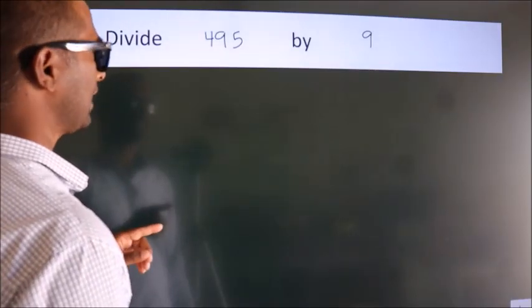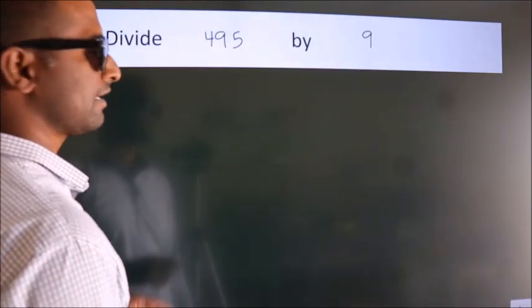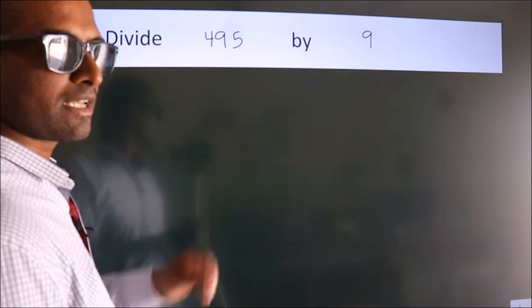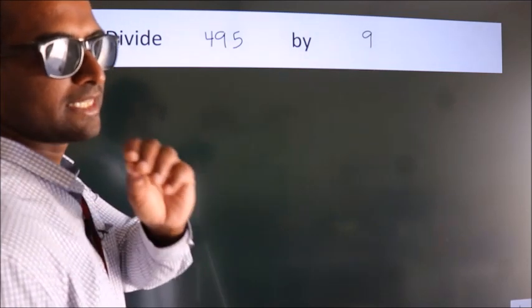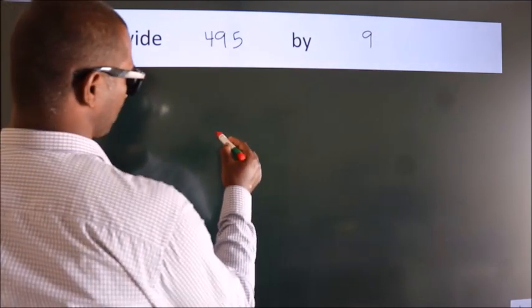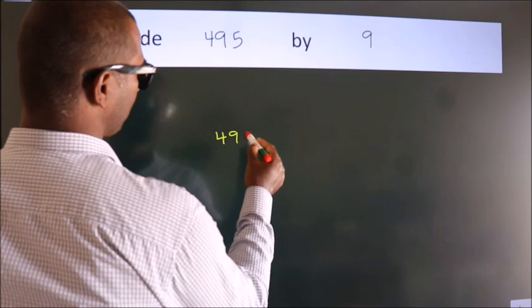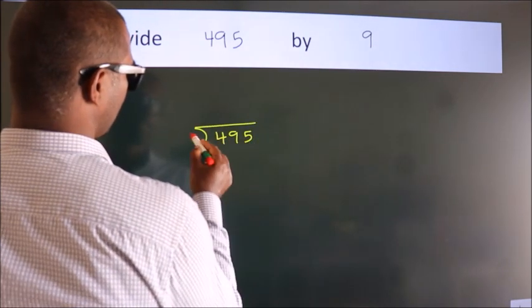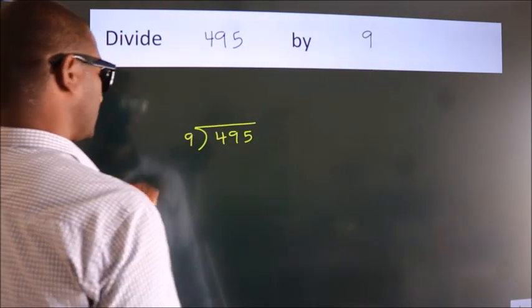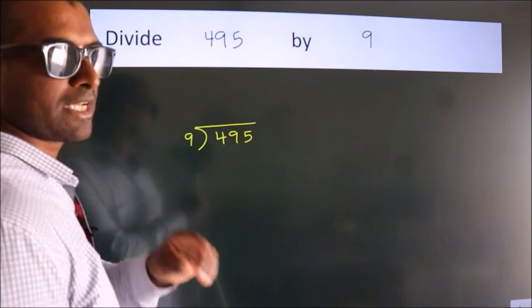Divide 495 by 9. To do this division, we should frame it in this way. 495 here, 9 here. This is your step 1.